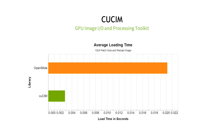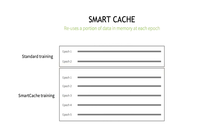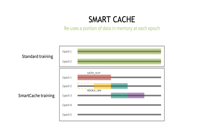A significant portion of a typical deep learning pipeline in digital pathology is spent on I/O. That's why we've created CooSim, which can efficiently tile large datasets on demand. You can also take advantage of our smart caching capabilities, which reuses a portion of data in memory at each epoch. These combined optimization methods result in up to a 10x speedup in your training.